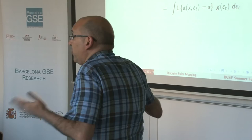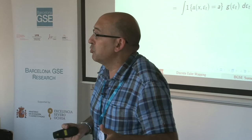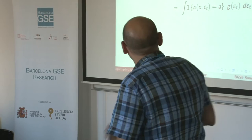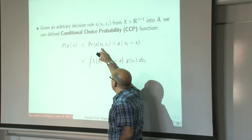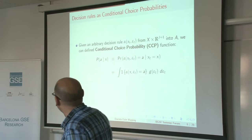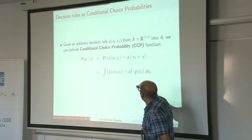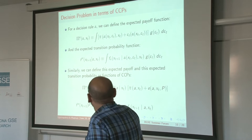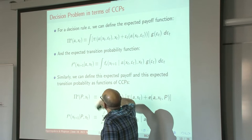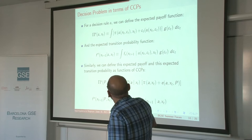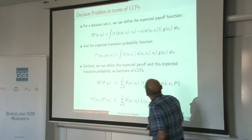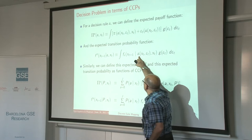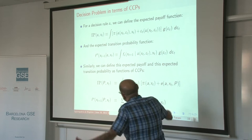The trick to derive Euler equations in our model is to transform this discrete choice model into a continuous choice model in terms of choice probabilities. Given a decision rule — an arbitrary decision rule depending on the state variables — we can define an integrated version of that decision rule, which is just the choice probability obtained by integrating the decision rule over the distribution of the unobservables epsilon. Given an arbitrary decision rule alpha, we can also define integrated versions of the one-period payoff (pi-e) and integrated versions of the transition probabilities of the state variables, integrated over the distribution of epsilon.